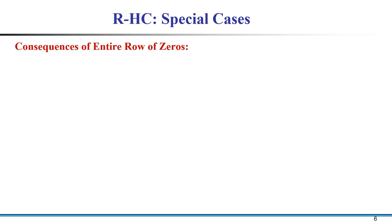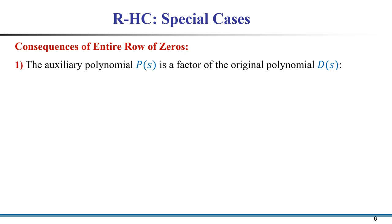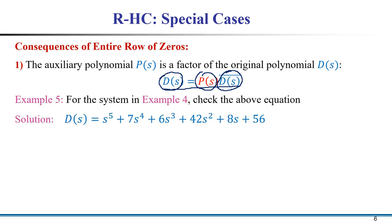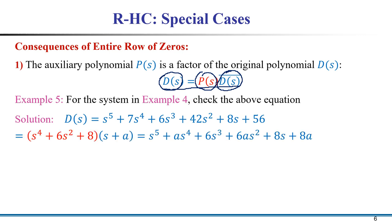On this slide we discuss the consequence of an entire row of zeros in the Routh-Hurwitz table. The auxiliary equation P(s) is a factor of D(s), therefore it is possible to write D(s) = P(s) · D-bar(s). So D(s) has two factors: P(s) and D-bar(s).